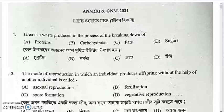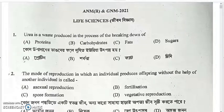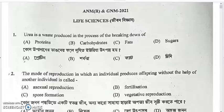First question: urea is a waste product produced in the process of the breakdown of proteins. Urea is produced in protein metabolism — the breakdown of protein. So the answer to the first question is option one.